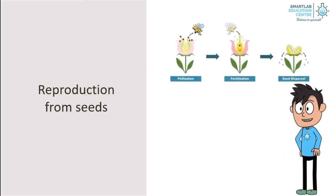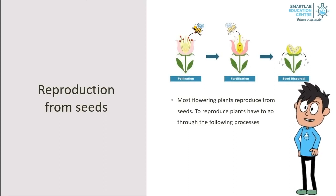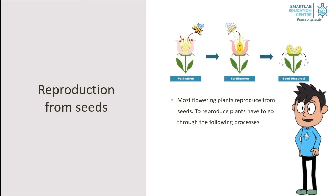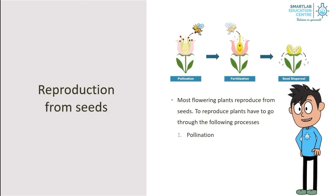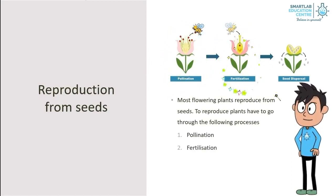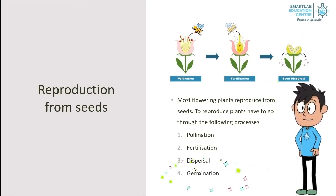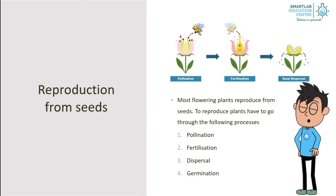Reproduction from seeds. Most flowering plants reproduce from seeds, and for reproduction to occur the following must happen: 1. Pollination, 2. Fertilization, 3. Dispersal, and lastly, germination. We will look at each stage in detail.